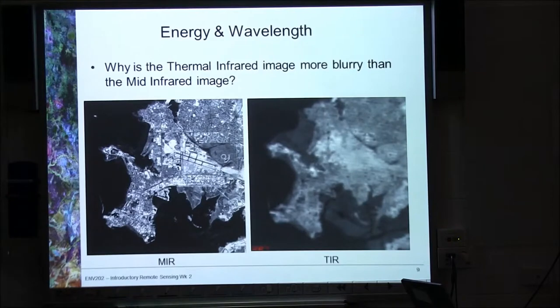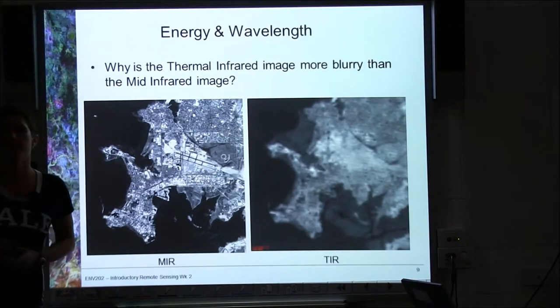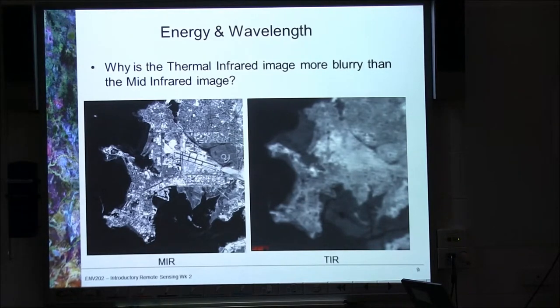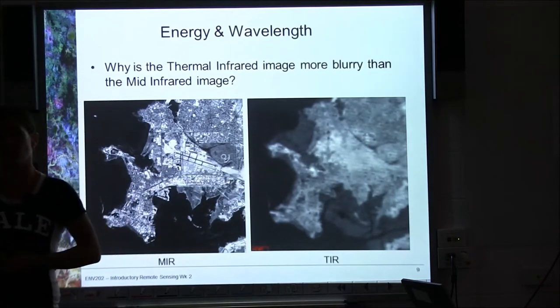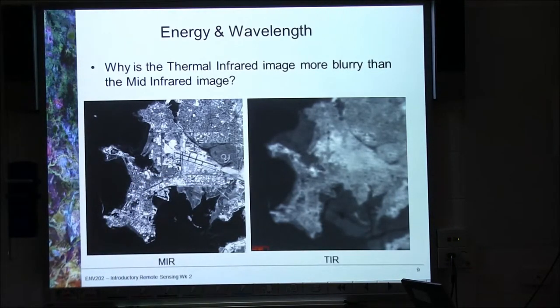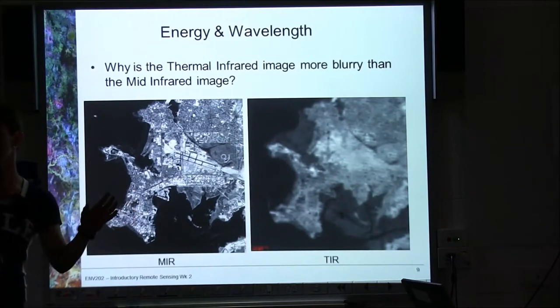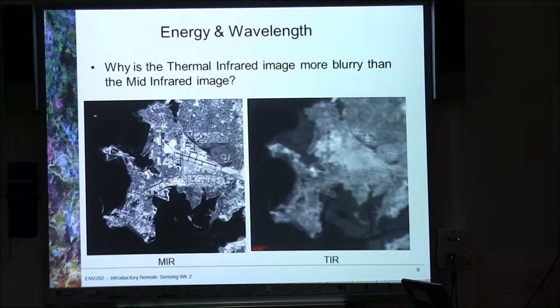Two images for you. Both from the Landsat sensor. Taken at the exact same time. But the one on the left is using mid-infrared, or short-wave infrared radiation. And the one on the right is using thermal infrared, or temperature. So, visually, what's the difference between the two? Which one's sharper? The one on the left. So, between the mid-infrared, or the short-wave infrared, and the thermal infrared, or our temperature, which has the longer wavelength? Thermal infrared is longer wavelength.